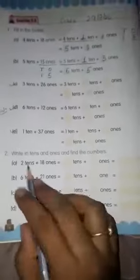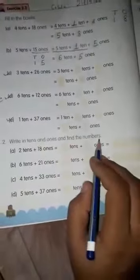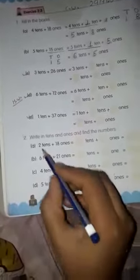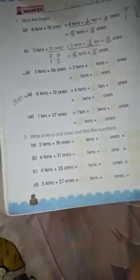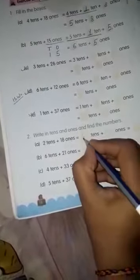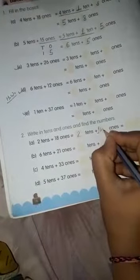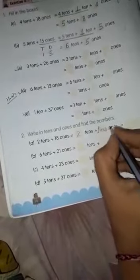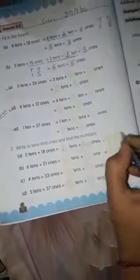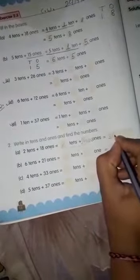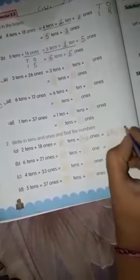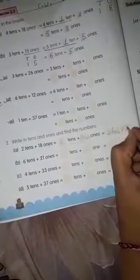Question number second. Write in tens and ones and find the numbers. Now what do we have to do? We have to write tens and ones and find the numbers. So, 2 tens plus 18 ones. 2 tens as it is. Now 18 ones we have to change, so we will write 1 ten plus 8 ones. 2 tens and 1 ten is equal to 3 tens plus 8 ones.